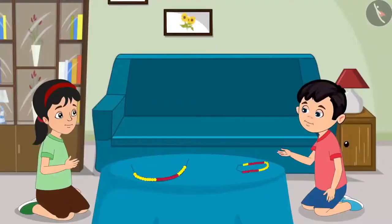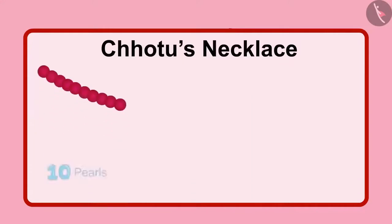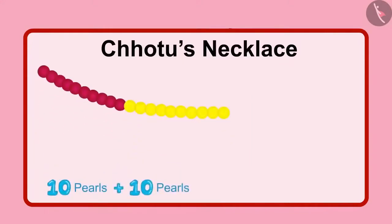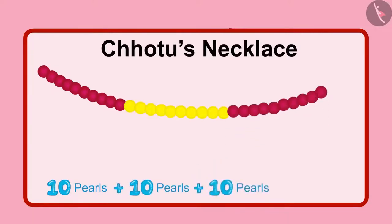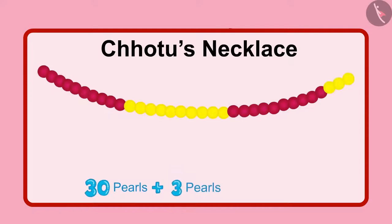Chotu counts his pearls: first 10 red pearls, then 10 yellow pearls, then 10 more red pearls — which means 3 sets of 10, making it 30 pearls. And there are 3 remaining pearls. So the total pearls are 33.